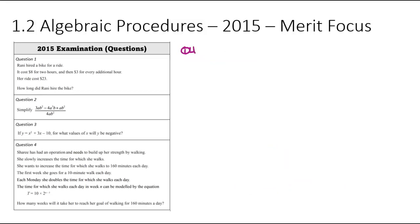On to question number four. And Cherie has had an operation and needs to build up her strength by walking. She will slowly increase the amount of walking she does. She wants to increase the walking until she can walk 160 minutes each day. The first week, she's going to go for a 10-minute walk. On each Monday, she doubles her time. So doubles. Good cue. Might be an exponential relationship coming up. The time in which she walks can be modeled by the equation. And perfect, it was an exponential one. And we can see the doubles represented in the 2 and the initial 10 minutes represented in the 10.